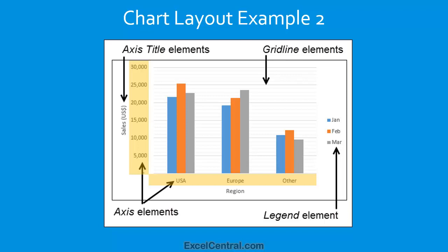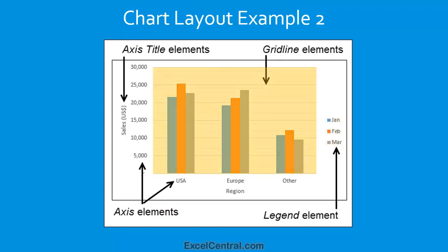Next, I've identified a Legend element. This describes the color coding used in the bars so that I can identify which month each bar belongs to. And finally, I've identified the Gridline Elements — those horizontal lines running across the body of the chart. The Gridline Elements make it easier to identify which value each bar relates to.